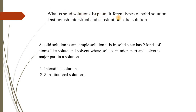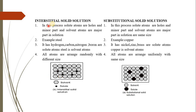What is a solid solution? Explain the different types of solid solution. If you have a solid solution, you can mix materials in the solid state. There are two kinds of atoms: solute and solvent. Solute is the minor component and solvent is the major component.